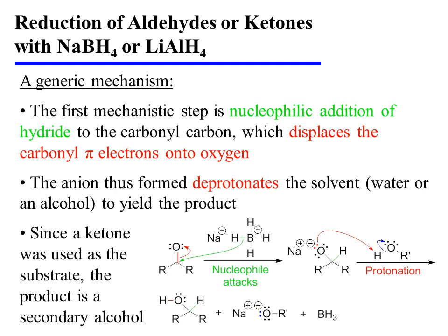This nucleophilic addition displaces carbonyl pi electrons onto oxygen. The anion that is formed then deprotonates the solvent, either water or an alcohol, to yield the product. In this generic example, a ketone was used as the substrate, so the product is a secondary alcohol in which the carbon bearing the hydroxyl group is connected to two other carbons.